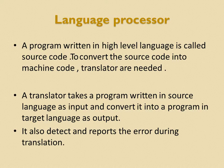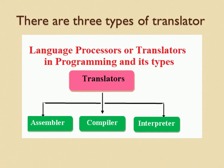The high level language written by the programmer is called source code, and the low level language is nothing but machine code. This translator takes a program written in the source language as input and converts it into a program as output. Now we will see the three types of translator.